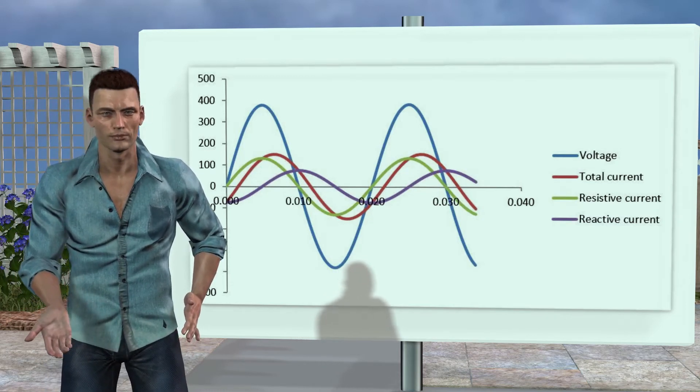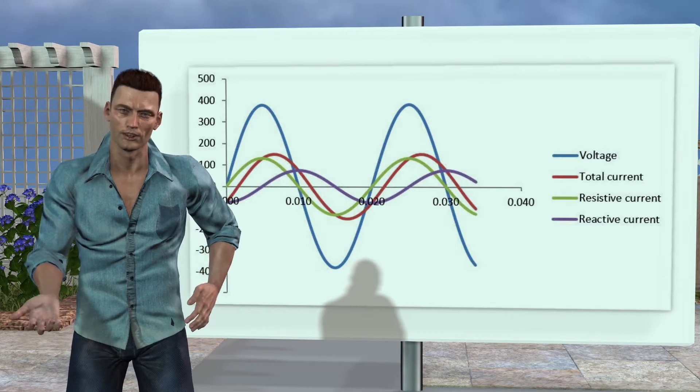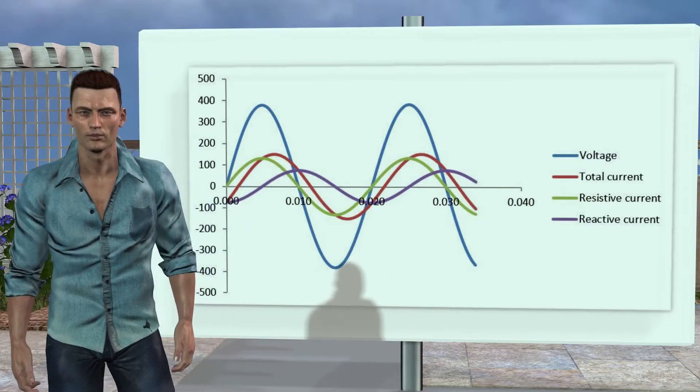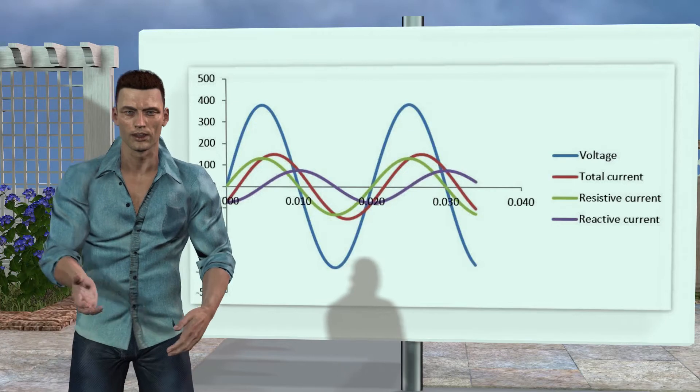a current in phase with the voltage, which we can call active current, and another current 90 degrees out of phase with respect to the voltage, which we can call reactive current.